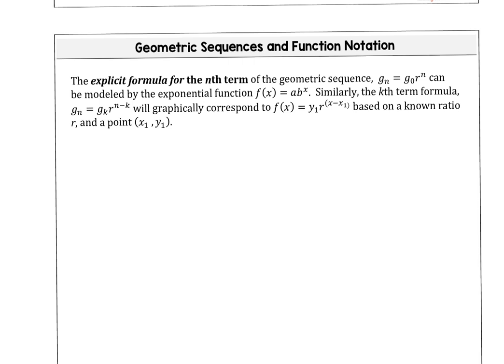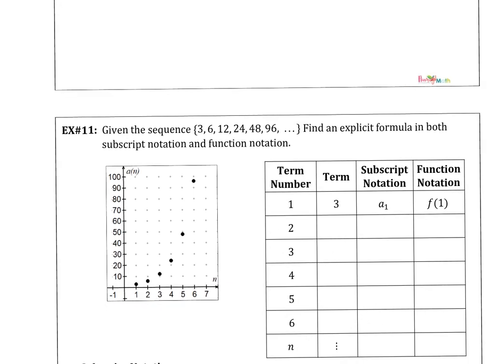In example 11, we're going to look at how the explicit formula for the n-th term, which is our g sub n equation, we can model that by an exponential function that relates to a times b to the x. Also, the k-th term formula, using any two terms, we can graphically correspond this k-th formula to that format for an exponential function. Let's go explore that a little bit in this example.